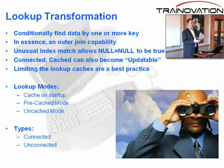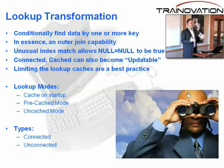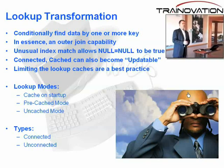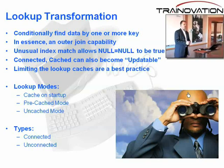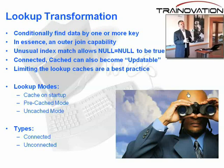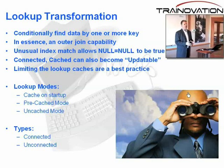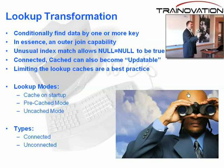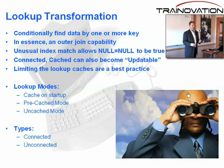What's the first piece of lookup? It conditionally finds data by one or more keys. So it's equivalent to an outer join to a child table. That's what the function of the lookup is about — to go out to the database and find data that exists.